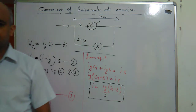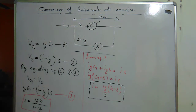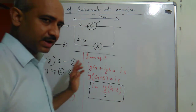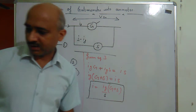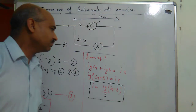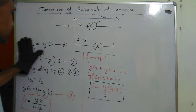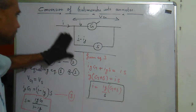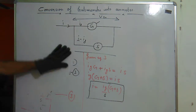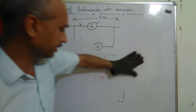So using this formula we can find the current flowing in the circuit — how much current is flowing. Now, if I want to change this galvanometer into a voltmeter, I need to convert the galvanometer into a voltmeter.